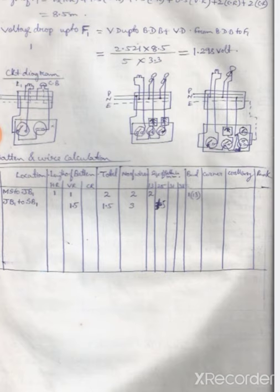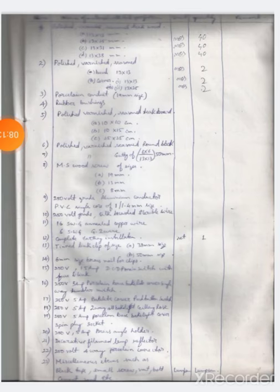The list of materials: polished varnish seasoned teak wood 13 by 13 mm will be 40, 13 by 25 mm will be 40, 13 by 13 mm that will be 40 numbers, 13 by 38 mm will be 14 numbers.